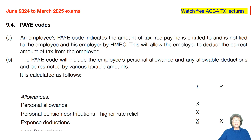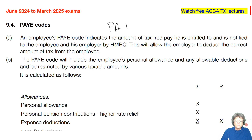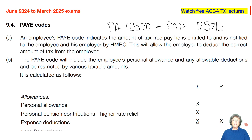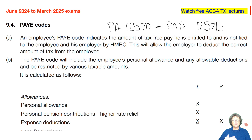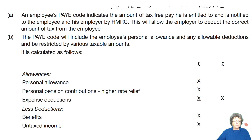Everybody gets a pay-as-you-earn code, and everybody gets a personal allowance. So if your personal allowance is £12,570, then your code will be £12,570, and that's how it works. This code is then given to your employer, and they use it through the pay-as-you-earn system to calculate how much tax you have to pay every time they do a pay run.